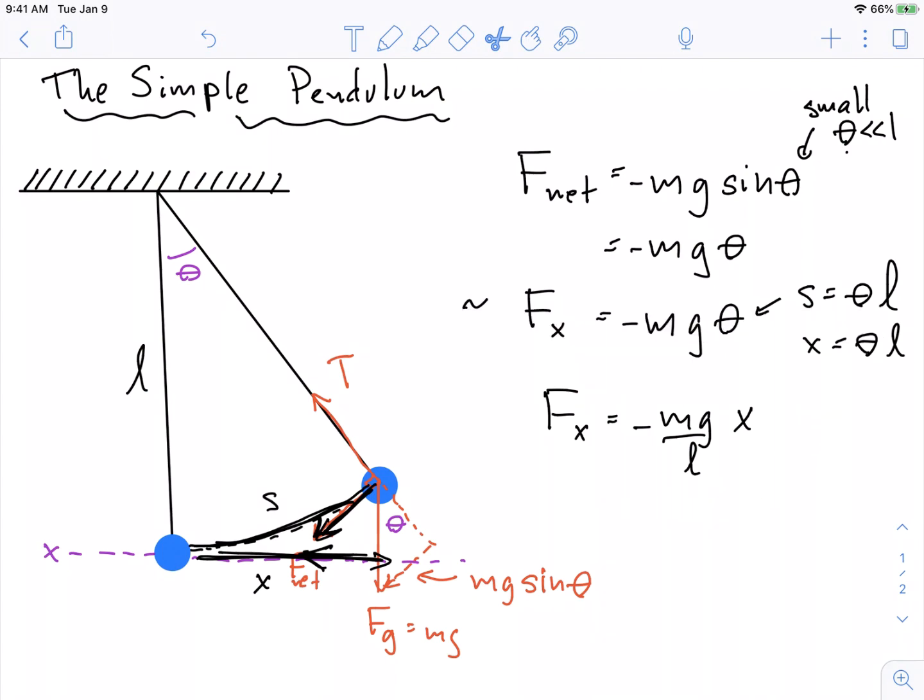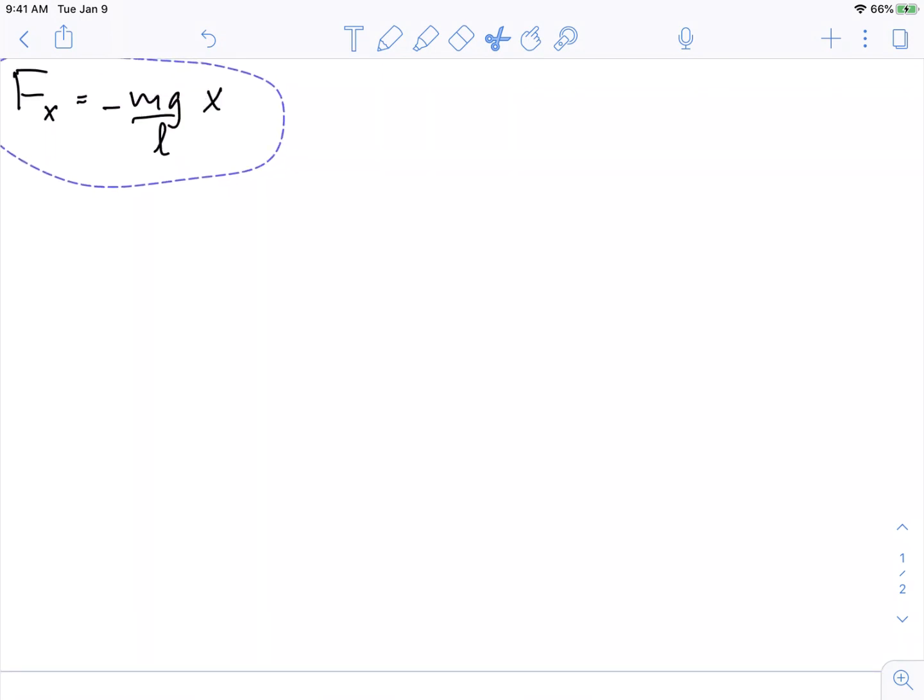So let's just copy and paste this formula here and let's see what we can get. Well, what does this imply in terms of simple harmonic motion? So we want to connect this to what we know about simple harmonic motion. So what does this imply? This implies that the mass times the acceleration, that's what fx is, acceleration in the x direction, is equal to negative mg over L times x.